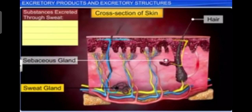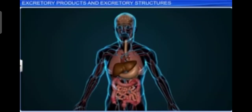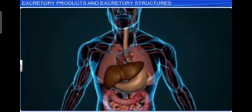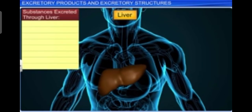The sweat and sebaceous glands in the skin can eliminate certain substances through their secretions. Sweat produced by the sweat glands is a watery fluid containing sodium chloride and a small amount of urea, lactic acid, etc. The primary function of sweat is to facilitate a cooling effect on the body's surface, and it also helps in the removal of some waste like urea.